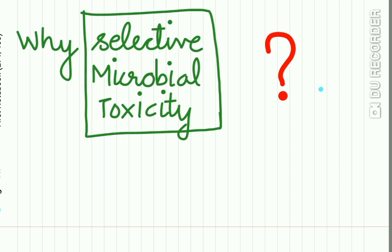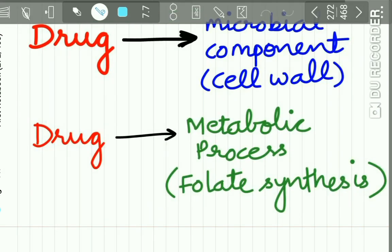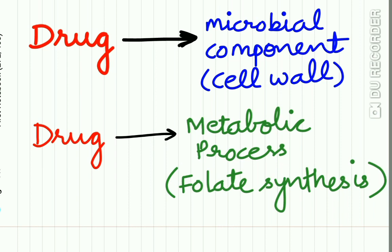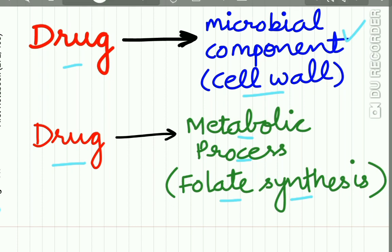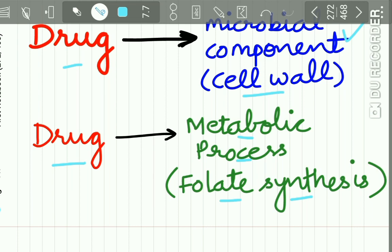What causes selective microbial toxicity? Why are these antimicrobial agents selectively toxic to microorganisms and non-toxic to the patient's body? This is due to the action of the drug on components of the microbe. For example, some drugs act on the cell wall of the microbe, or on metabolic processes such as folate synthesis — processes present only in microbes and not in the host. These antimicrobial agents have high affinity to microbial biomolecules, making them selectively toxic.